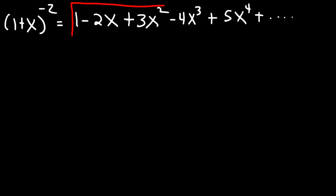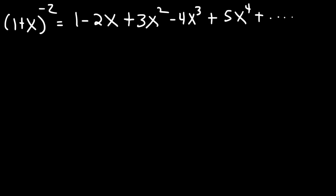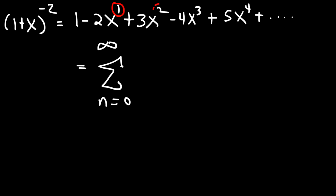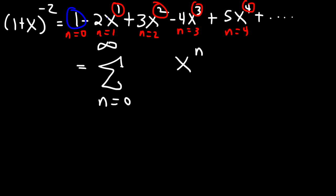How can we express this series using sigma notation? The n=0 term is first, then n=1, n=2, and so forth. We're going to sum from 0 to infinity. The exponents on x correspond to the n value — so x⁴ is n=4, x³ is n=3, and so on. So we're going to have x to the n. The coefficients are always 1 more than n — 3 corresponds to n=2, 4 to n=3 — so we represent the coefficients as n plus 1.